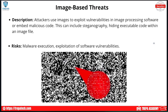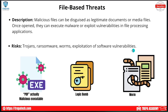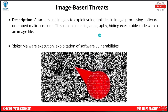Image-based threats involve attackers using images to exploit vulnerabilities in image processing software or embed malicious code. This is referred to as steganography — hiding executable code within an image file. You can receive an image with something malicious embedded in it, similar to macro viruses in Excel spreadsheets. You might think a .png is safe, but when you open that file the malicious code in the backend gets executed. That's steganography: hiding something in plain sight within an image.